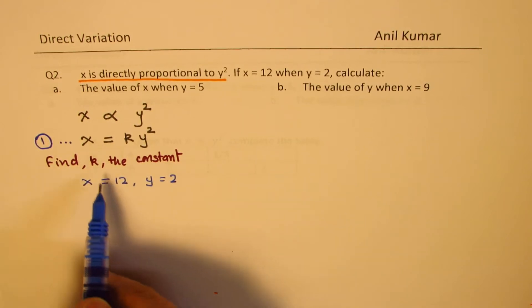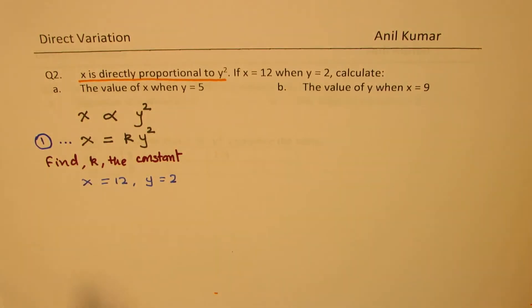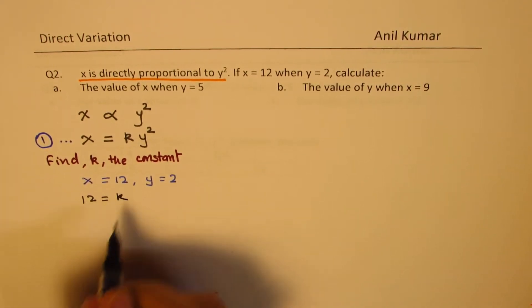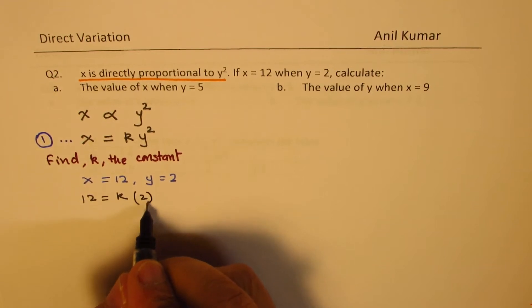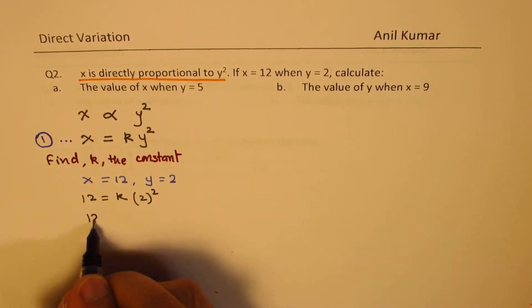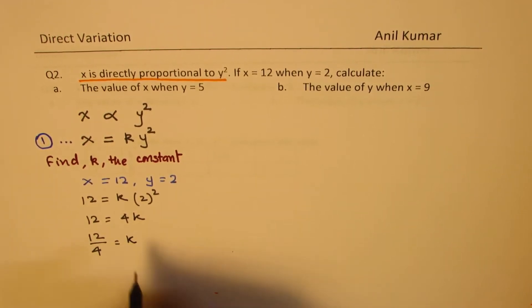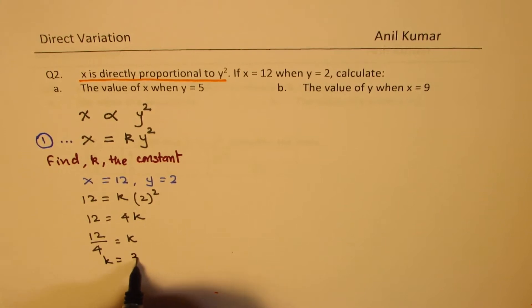Substitute the values in the given equation and so we get 12 equals to k times 2 square or 12 is equal to 4k. So 12 divided by 4 is the value of k and we get k as equal to 3.